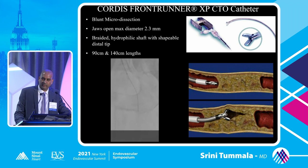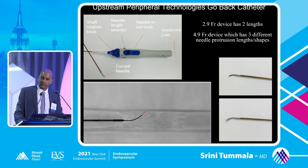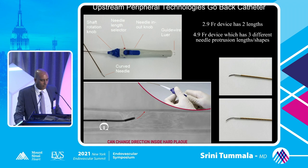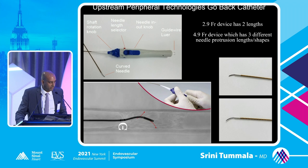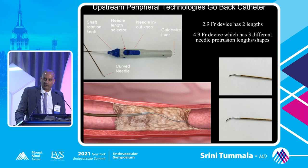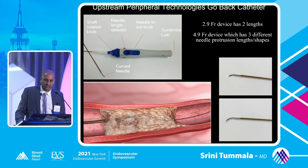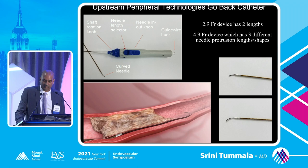Another catheter system that recently hit the market is the Go-Back catheter from Upstream Peripheral Technologies, which PK has shown on a live case. You can see in the video that you're able to direct a needle into the CTO and change its direction, letting you snake through the CTO to eventually gain guide wire access. This is great for puncturing through very dense, tough caps — proximal, distal, or within the CTO itself.